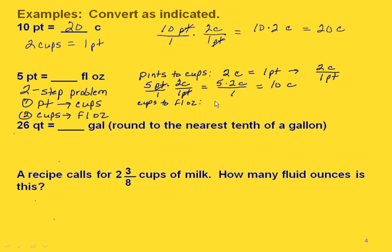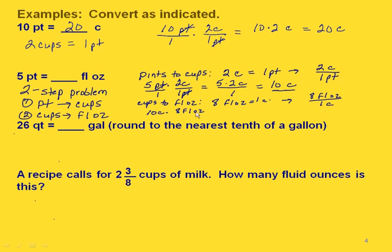Now we go from cups to fluid ounces. Our equation says 8 fluid ounces is equal to 1 cup. Since we're starting with cups and going to fluid ounces, we want fluid ounces on top and cups on the bottom. So we take 10 cups times 8 fluid ounces over 1 cup. Our cups cancel, so now we're at ounces. We have ones on the bottom, so 10 times 8 is 80 — we end up with 80 fluid ounces.